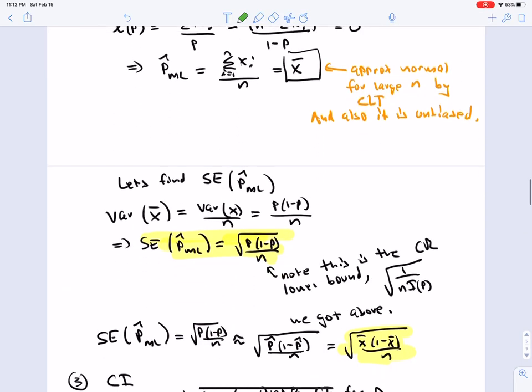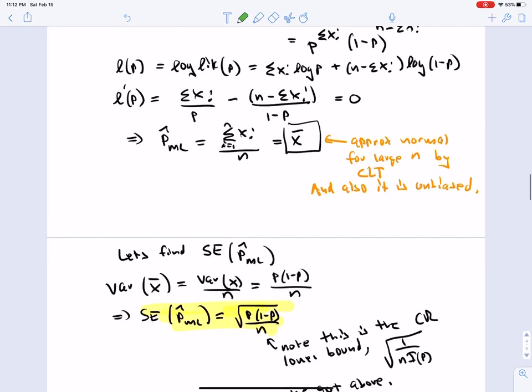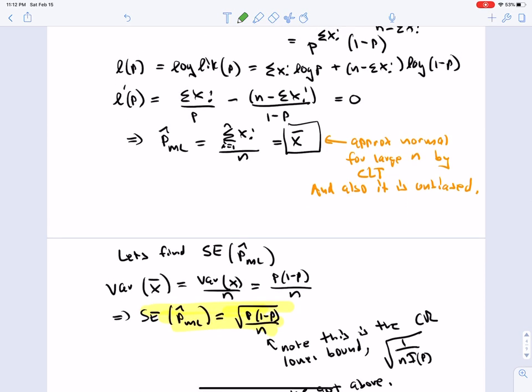And furthermore, we can check what the SE is for X-bar. We've done this calculation before. The variance of X-bar is variance of X over N. The variance of X is P(1 minus P). So indeed, the standard error is square root of P(1 minus P) over N. And so this is exactly the same as the square root of 1 over N Fisher information. So in other words, we achieve the Cramer-Rao lower bound for any size N. Fascinating.